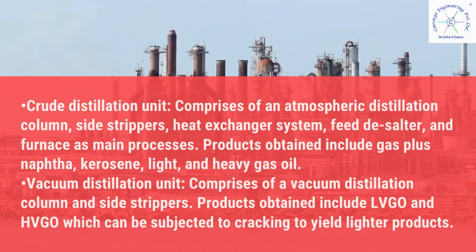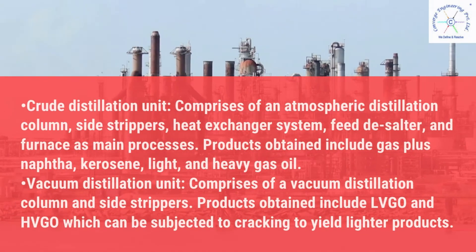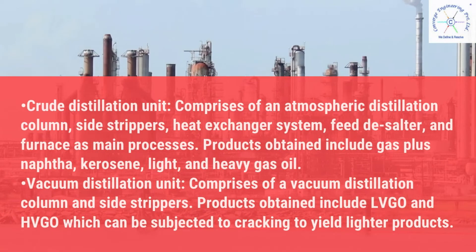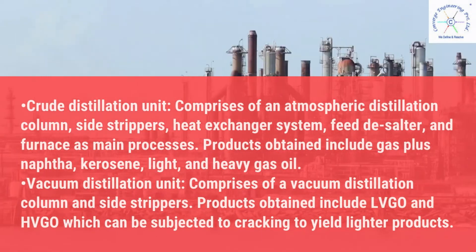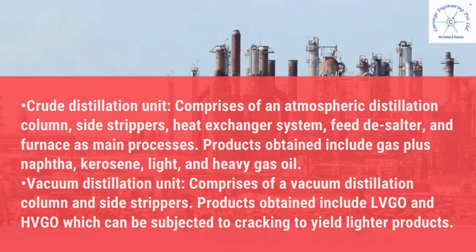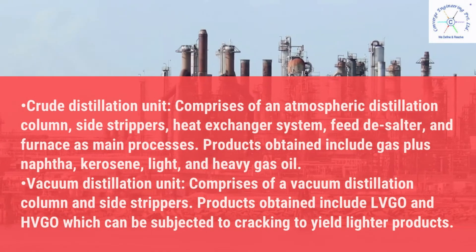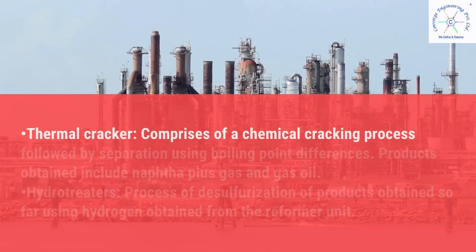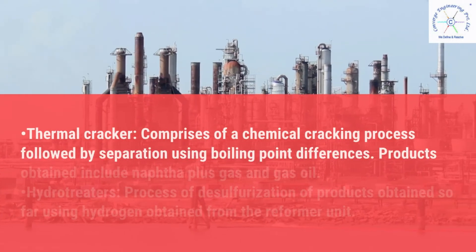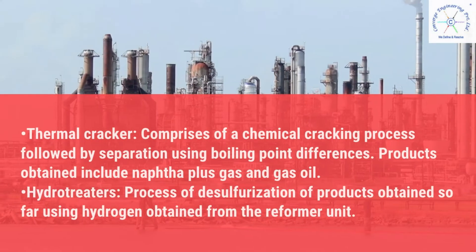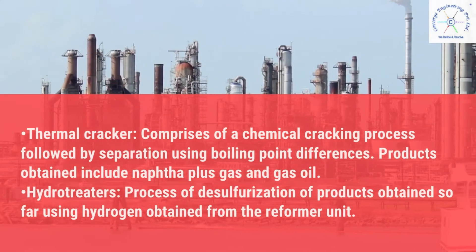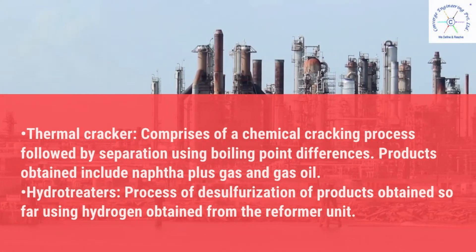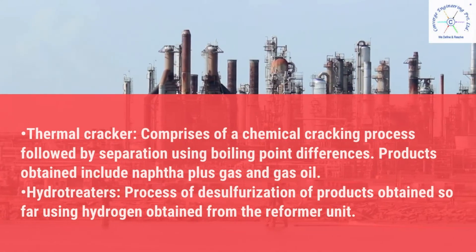The vacuum distillation unit comprises a vacuum distillation column and side strippers. Products obtained include LVGO and HVGO, which can be subjected to cracking to yield lighter products. The thermal cracker comprises a chemical cracking process followed by separation using boiling point differences, and products obtained include naphtha plus gas and gas oil.